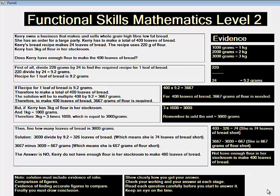3667 minus 3000 equals 667 grams, which means she is 667 grams of flour short. The answer is no, Carrie does not have enough flour in her stockroom to make 400 loaves of bread.